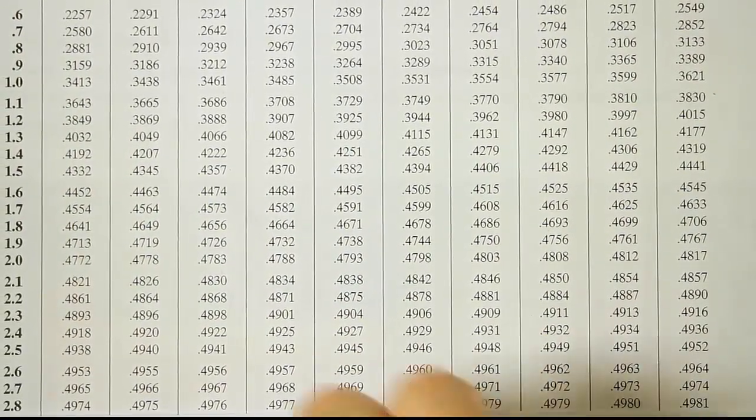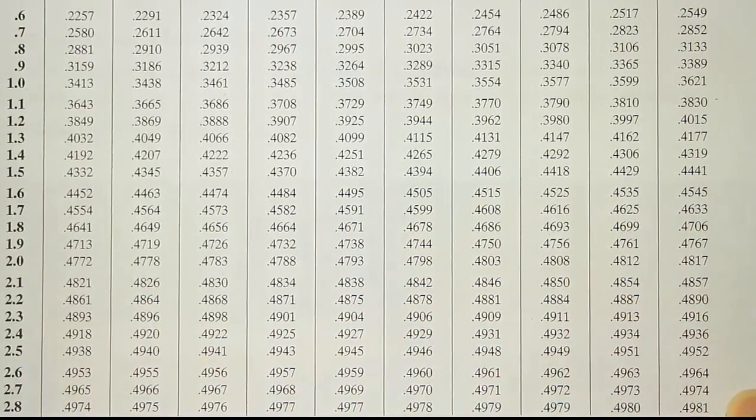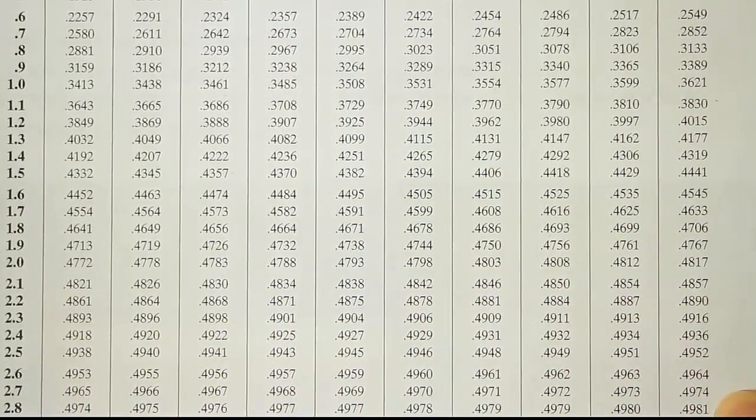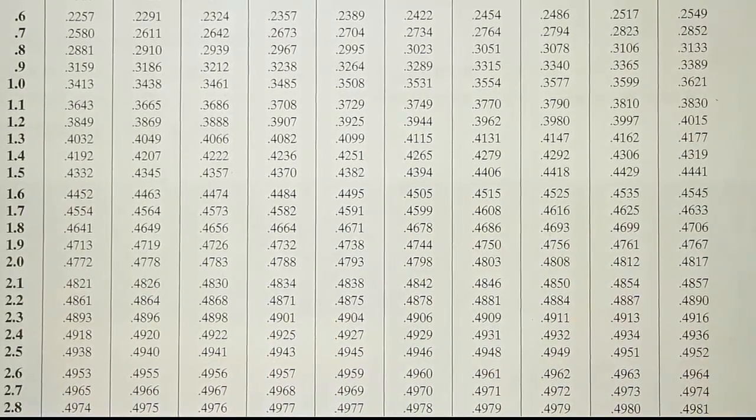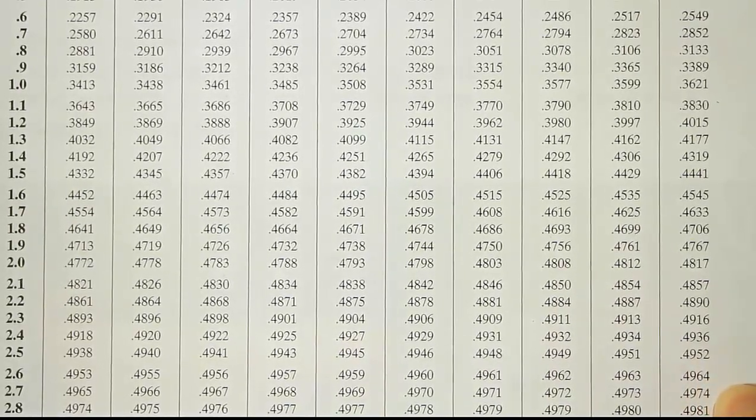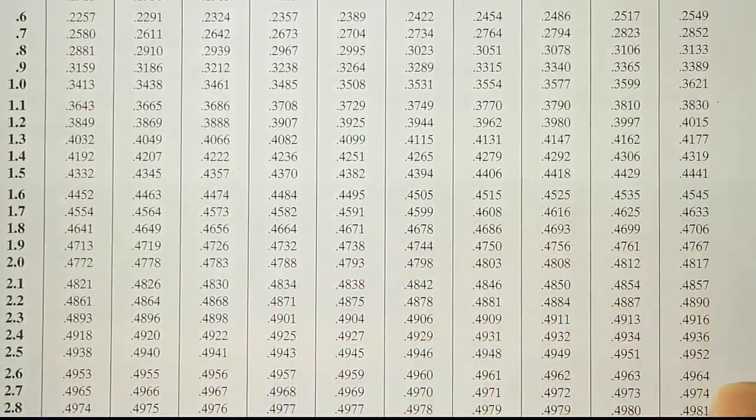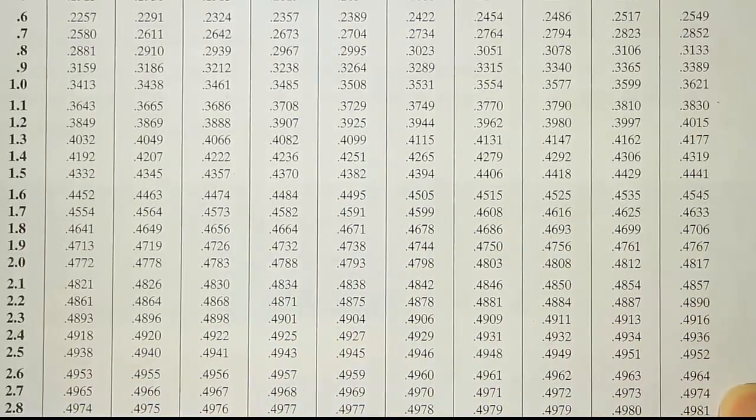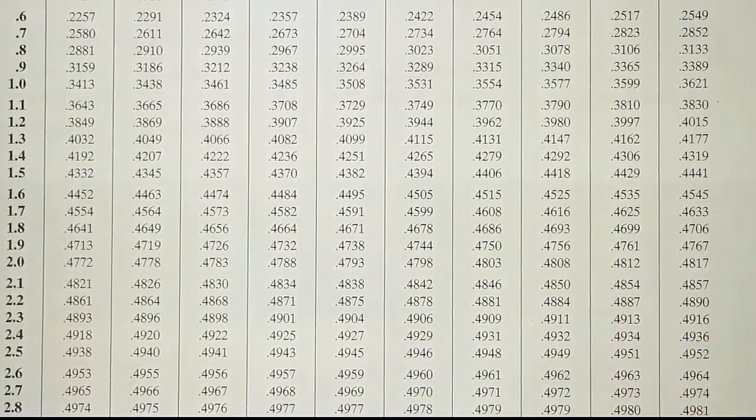Okay, and we find out the area there, 2.89 is associated with 0.4981. Remember, the last position here is the 9 position, so it's 2.89 at the very end, and we find 0.4981 is the number.